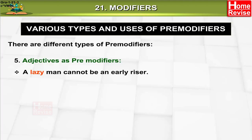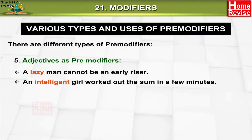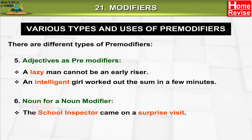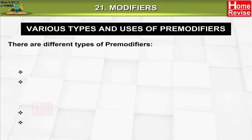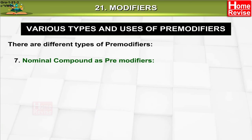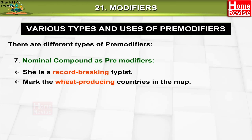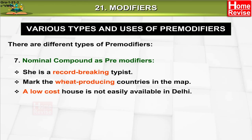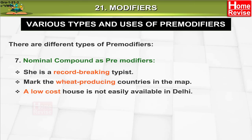Six: noun as a noun modifier. Example: 'The school inspector came on a surprise visit.' 'I'm going to my country house.' Seven: nominal compound as pre-modifiers. Example: 'She is a record-breaking typist.' 'Mark the wheat-producing countries on the map.' 'A low-cost house is not easily available in Delhi.'